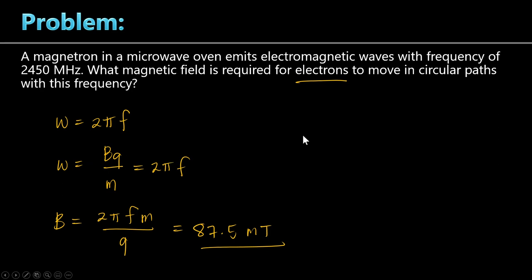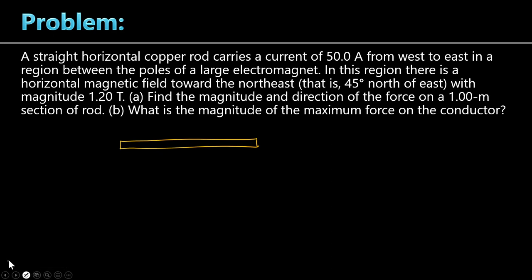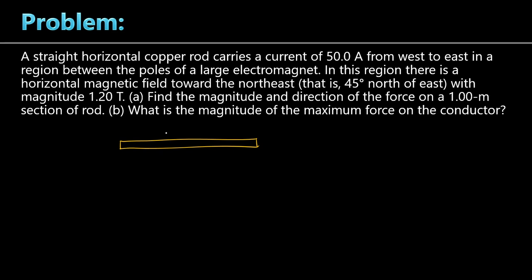Problem 6. A straight horizontal copper rod carries a current of 50 amperes from west to east in a region between the poles of a large electromagnet. Unlike the previous problems with individual charges, now we have a conductor with current flowing through it. The current I is 50 amperes, flowing from west to east along the conductor.